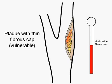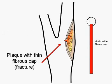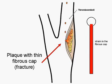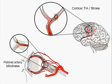Eventually, the plaque fractures. Small blood clots form and float downstream to the brain. These clots can lodge in smaller blood vessels.